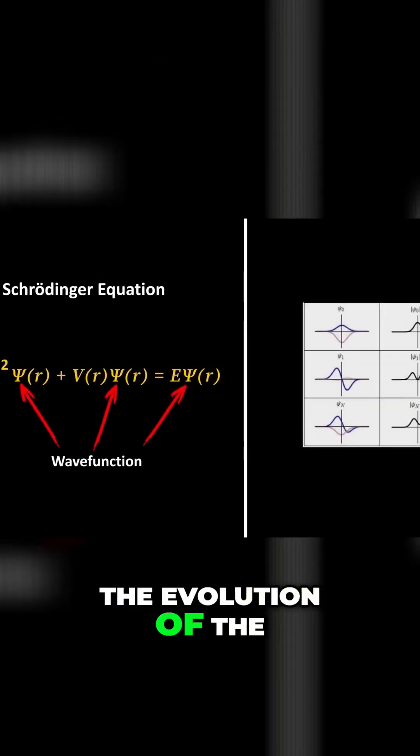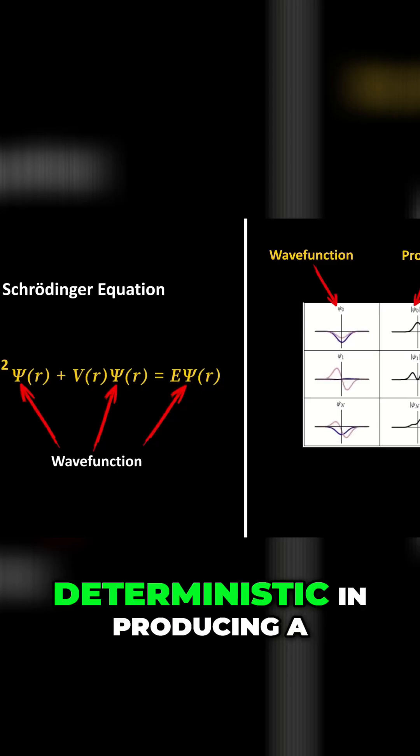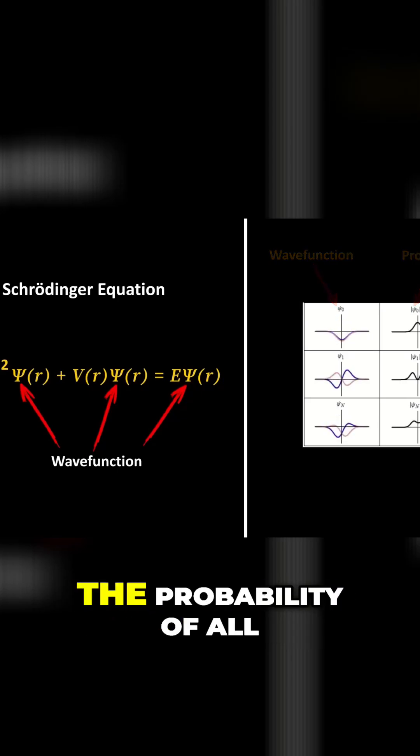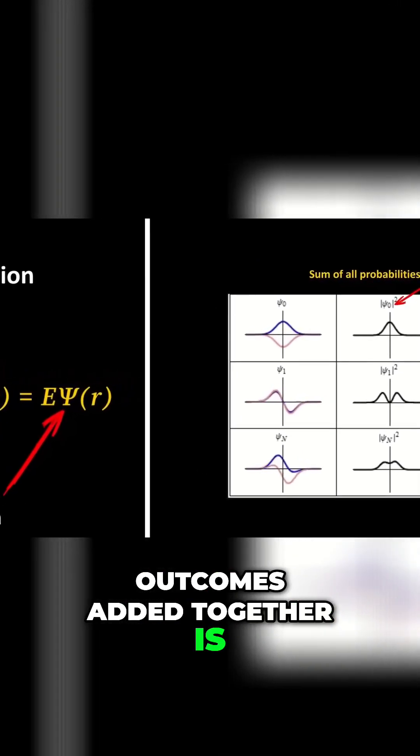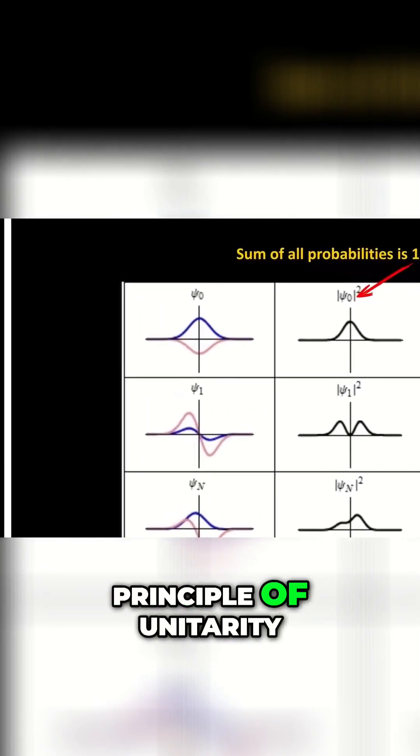The evolution of the wave function that determines the quantum state of any system is completely deterministic and producing a probability of an outcome. The probability of all outcomes added together is always equal to 1. This is called the principle of unitarity.